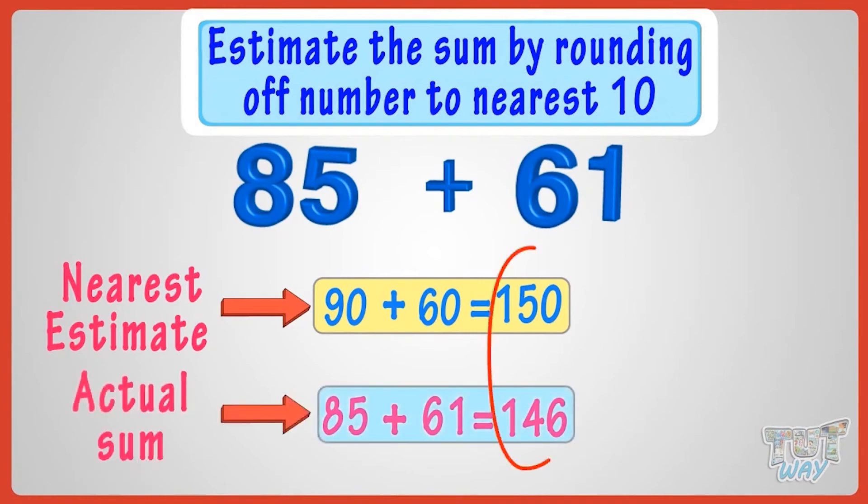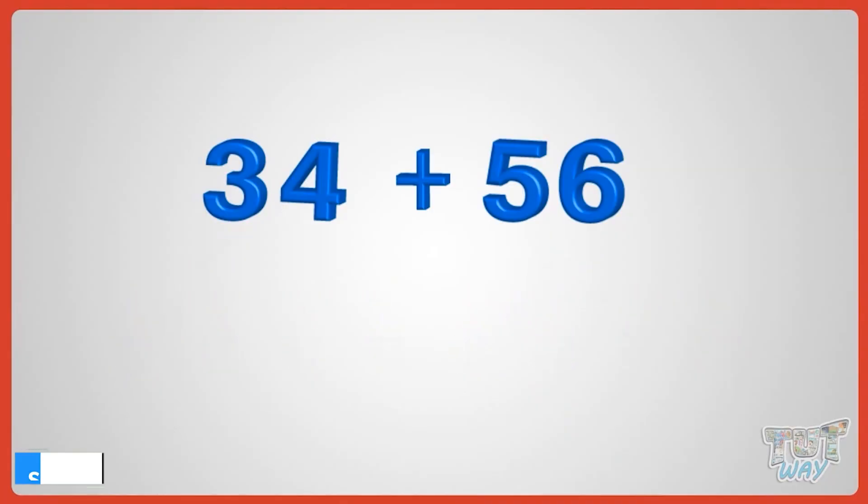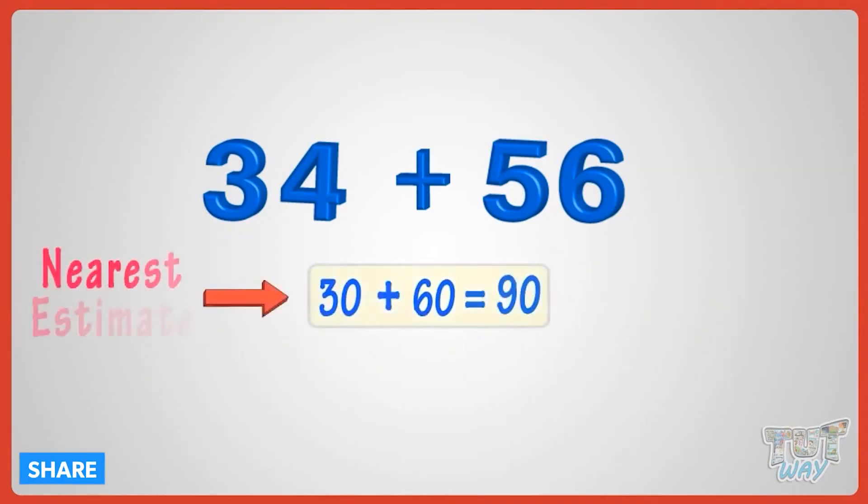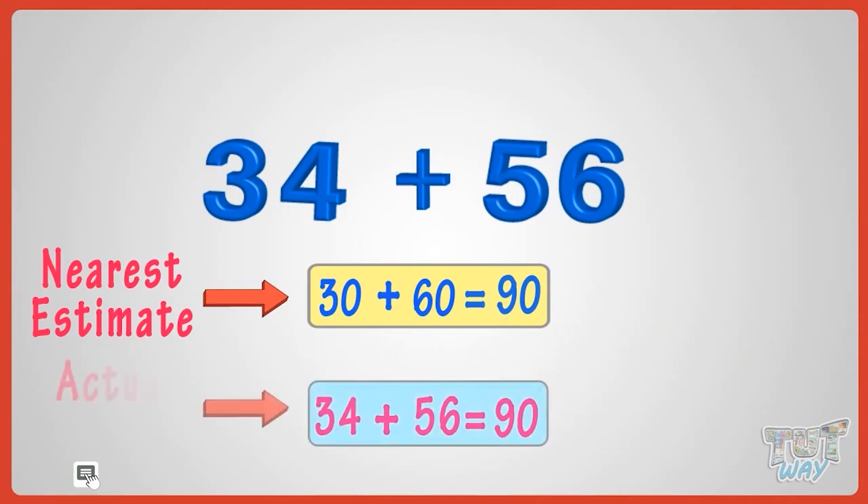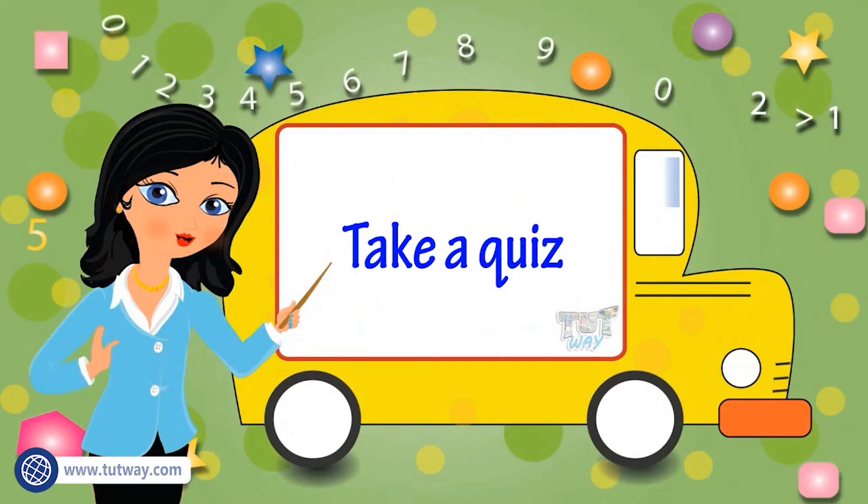So what have we learned? We have learned to make rough estimates by rounding off the numbers. It helps us in fast calculations when necessary. Now you may go ahead and take a quiz to practice more. Bye bye.